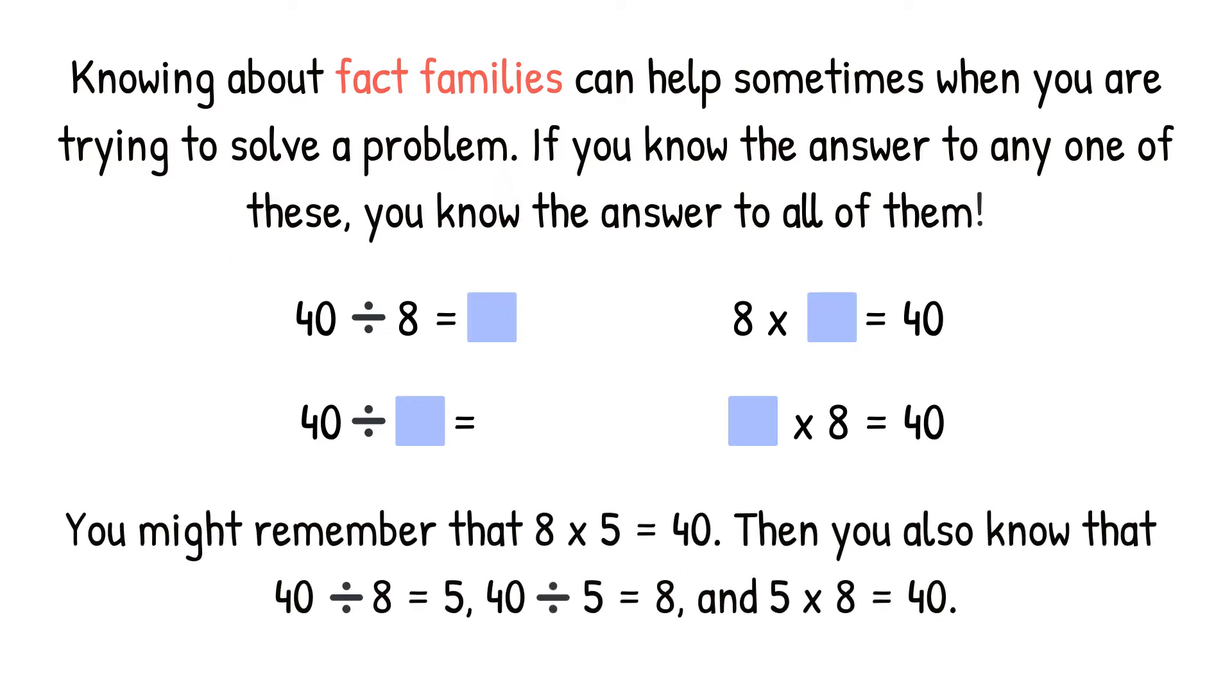You might remember that 8 times 5 equals 40. Then you also know that 40 divided by 8 equals 5, 40 divided by 5 equals 8, and 5 times 8 equals 40.